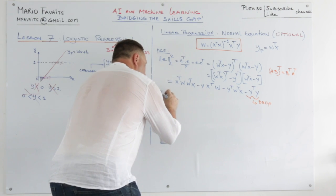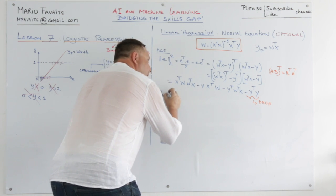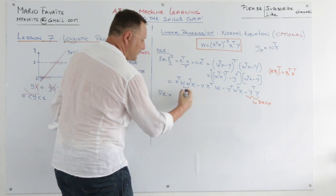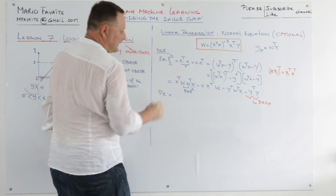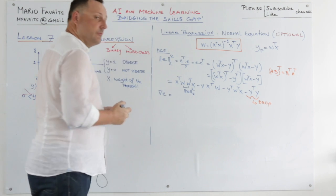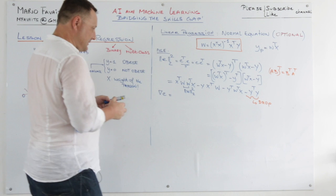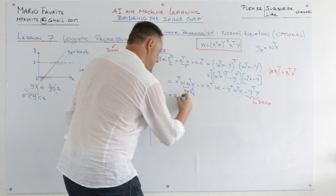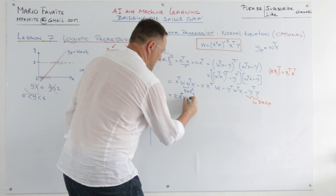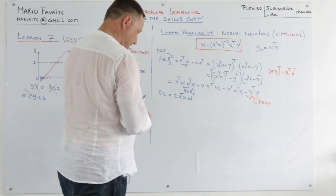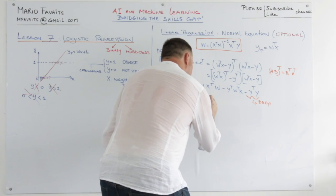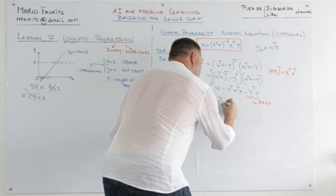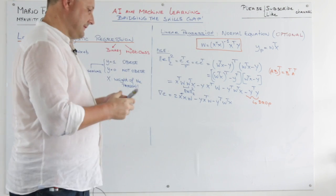So the derivative of the error with respect to W equals: for the X transpose W times W transpose X term — that is the L2 norm — taking the derivative brings a 2 to the front, giving 2 X transpose X W. Then minus Y X transpose W, minus Y transpose W transpose X. And we set this to zero.